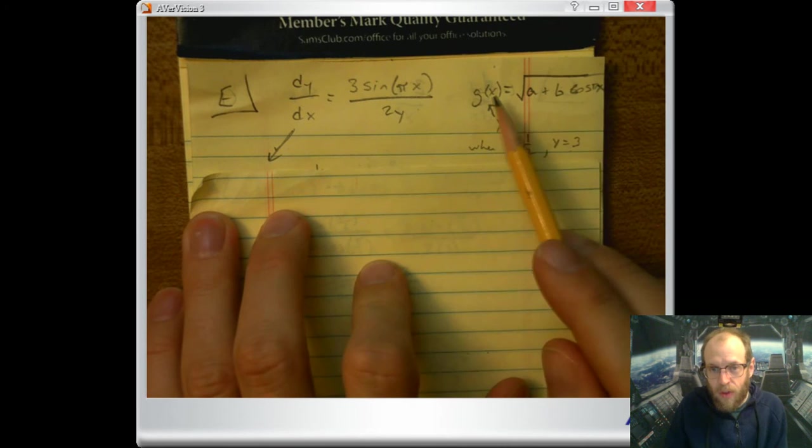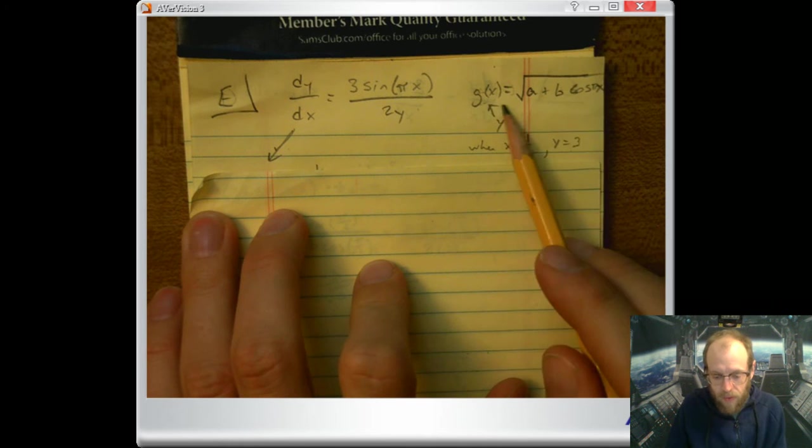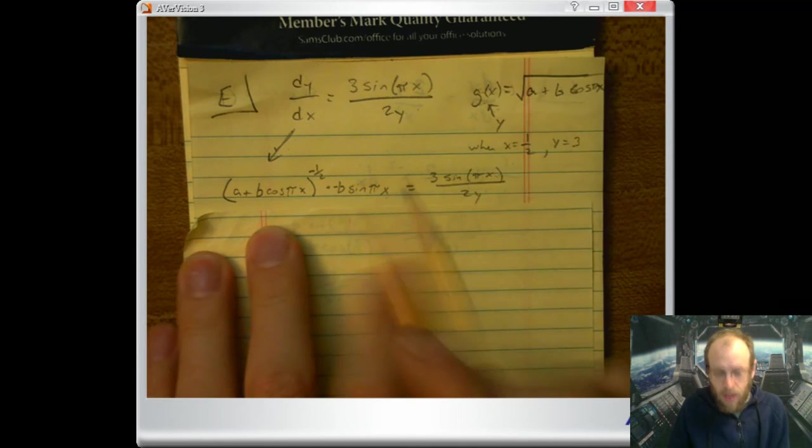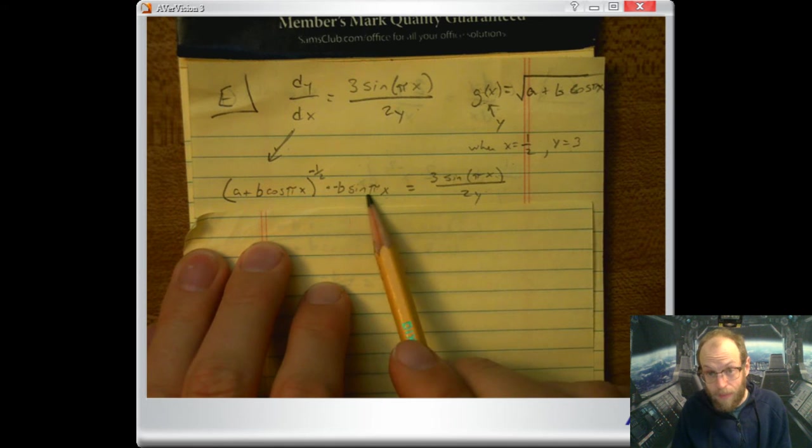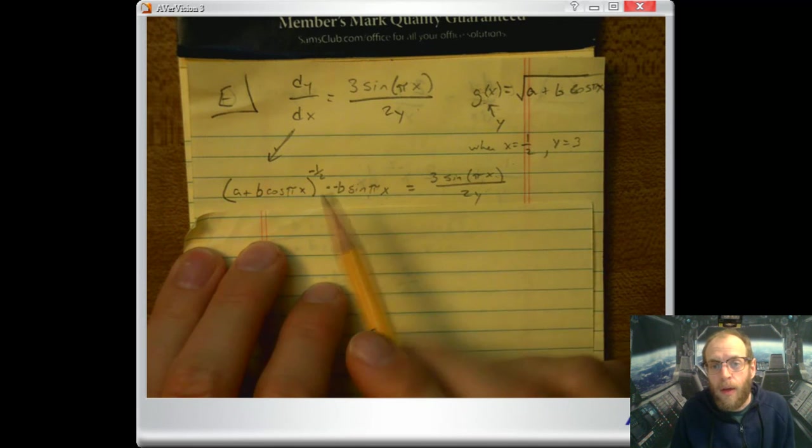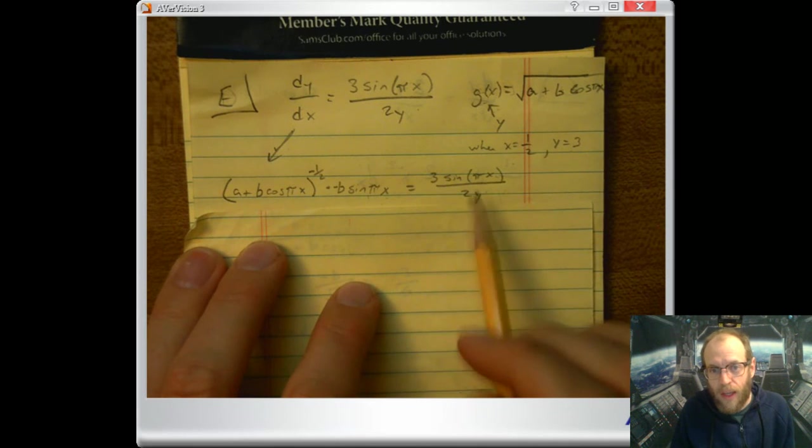So dy/dx is of course the derivative of y, which is the derivative of g of x. Here don't forget to use the chain rule. And then on this side I'm just gonna leave it like it is because I have values for x and y I can plug in and turn those into constants.